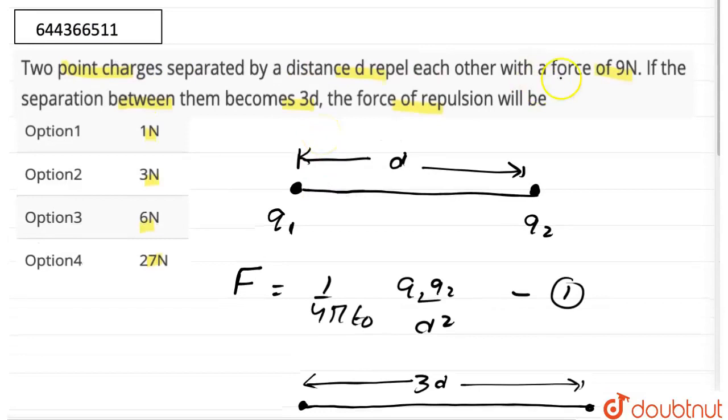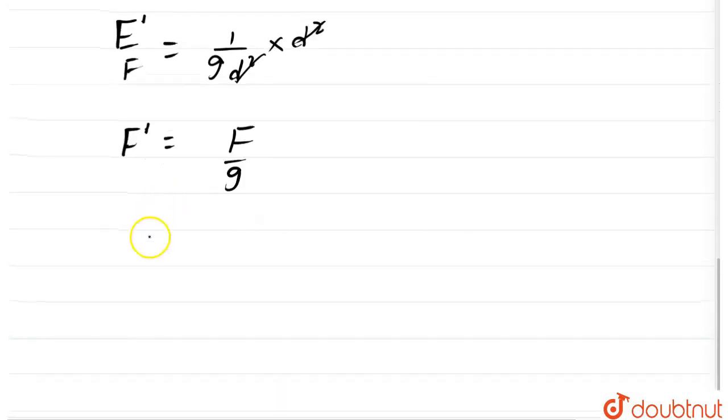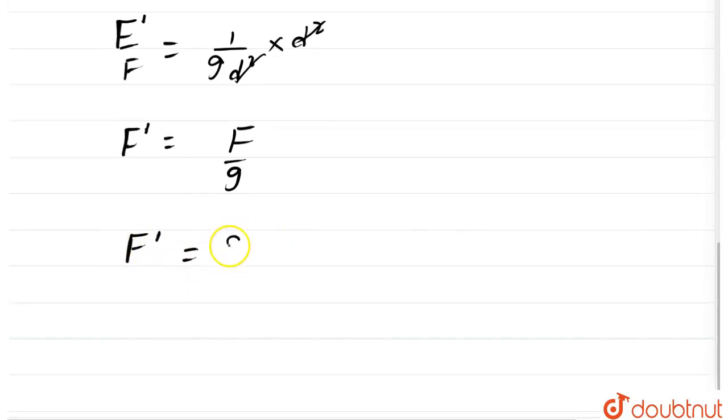Now it is given in the question that the initial force is 9 newtons. So substituting the value we get f dash our new force is equal to 9 upon 9 which comes out to be 1 newton.